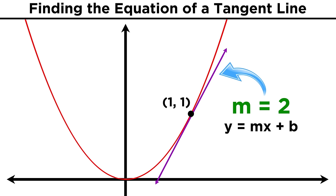If the slope is equal to two, then we just do some algebra by plugging in the coordinates of the point, as well as the slope, into the equation for a line. We get one equals two times one plus b, and the intercept must be negative one. Therefore, the equation of this tangent line is y equals two x minus one.